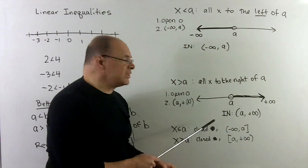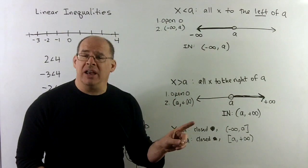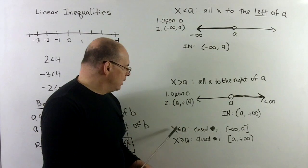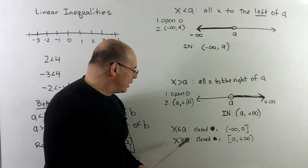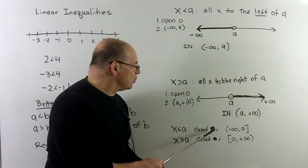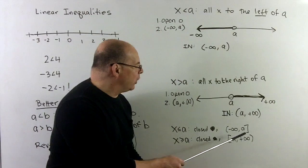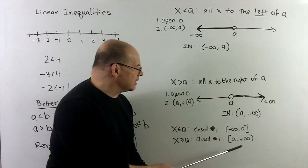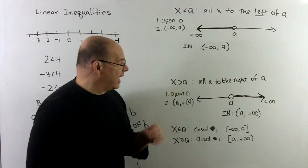Two other cases: if we want to keep a, we use the inequality symbols with bars underneath — less than or equal to a, or greater than or equal to a. The changes are: when drawing the picture, we shade in the circle rather than leaving it open. For interval notation, we use brackets on the a instead of parentheses, indicating a is being kept in the answer.